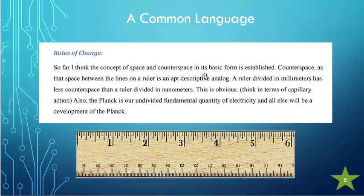Just one more little thing here. So far, I think the concept of space and counter space in its basic form is established. Counter space, as that space between the lines on the ruler, is an apt descriptive analog. A ruler divided in millimeters has less counter space than a ruler divided in nanometers. Now, this makes no sense in Cartesian three-dimensional space.